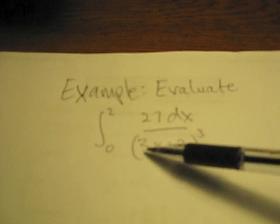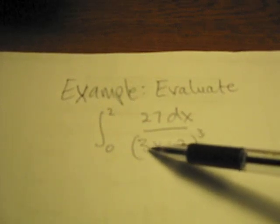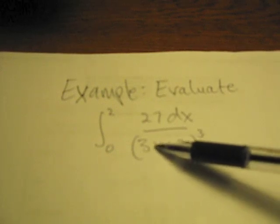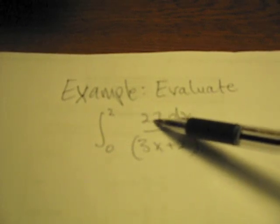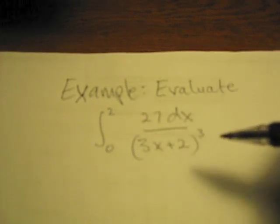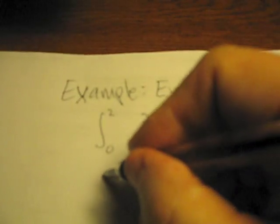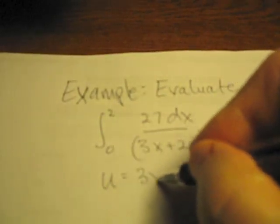However, what we do notice is if I look at this function which is cubed here, if I was to look at the derivative of this inside function, it would produce a constant. Notice I have a constant up here. So this allows me to think about using a dummy variable such as u is equal to 3x plus 2.